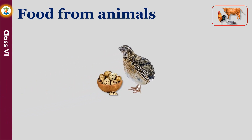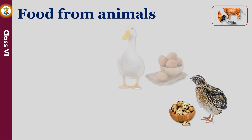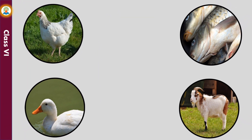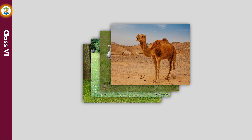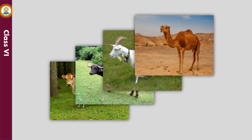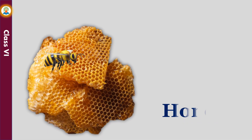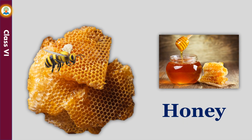Animals directly or indirectly depend on plants for food, so they are called consumers. Human beings consume a variety of animal products as food. We get eggs from hen, duck and quail. We get meat from hen, goat, duck and fish. We get milk from cow, buffalo, goat and camel. Honey bees provide us honey, which they prepare from the nectar of plants and store in their beehives.